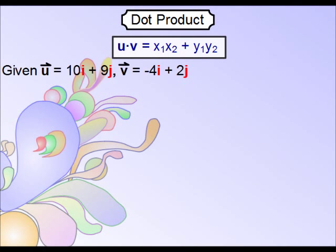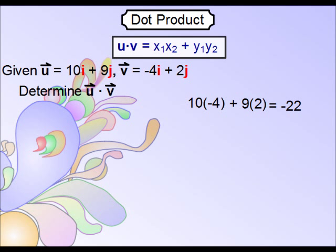Let's say, for example, that we were given vectors u and v, with u being 10, 9, and v being negative 4, 2. Determine the dot product. As stated before, what you would do is multiply your x values, 10 and negative 4, then multiply your y values, 9 and 2. Just add them up, and that's it.